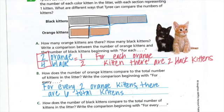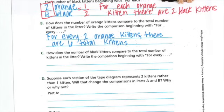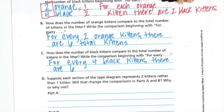How does the number of black kittens compare to the total number of kittens in the litter? So, same thing, but instead of orange, we want black this time. So, we would say for every four black, there are six total.